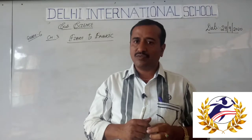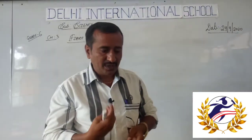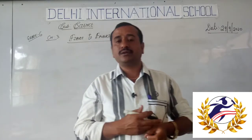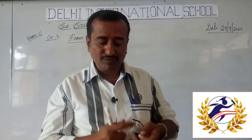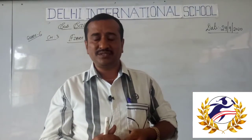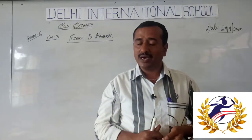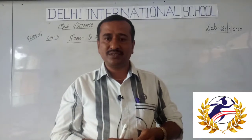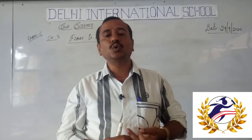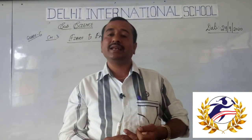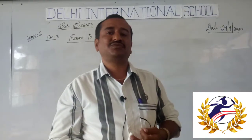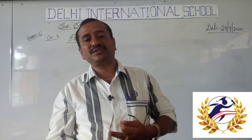These fibres are obtained from different substances, mainly from plants and animals. They are called natural fibres. For example, cotton, jute, silk, and wool are called natural fibres, because we obtain these from plants and animals.